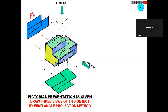One more important point: while seeing from the top view, one step is there, but this step is not visible from the top view. So here you have to show that line with a dotted line. These dotted lines are used for showing hidden objects — for showing hidden objects you have to indicate them like this.